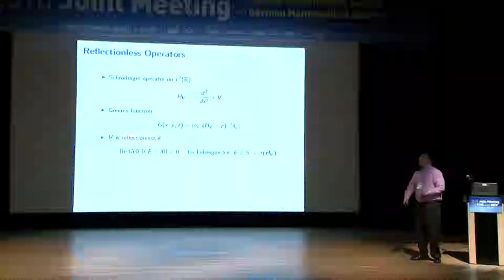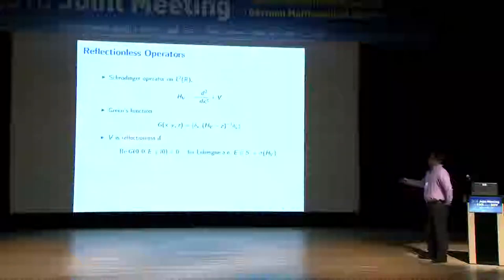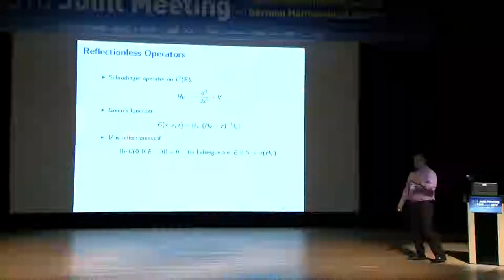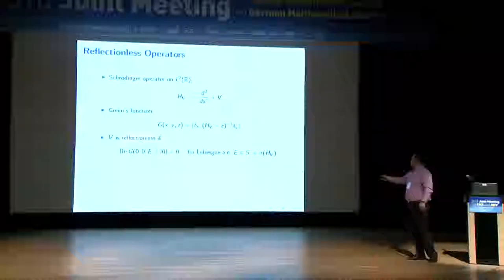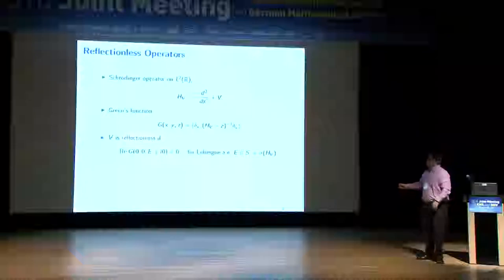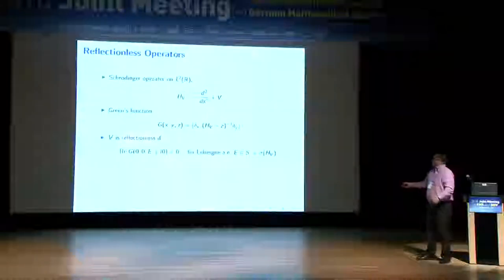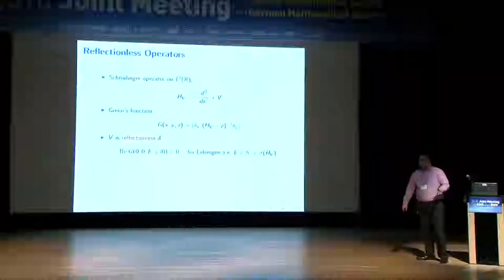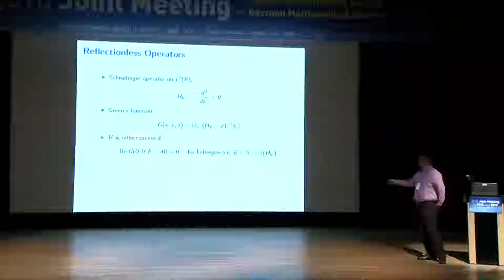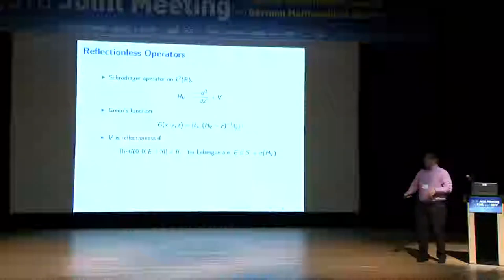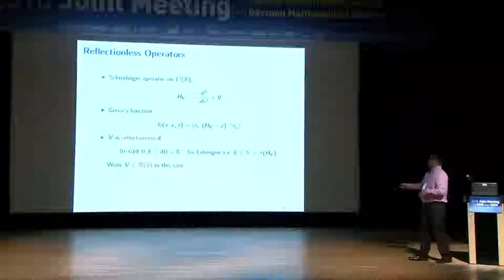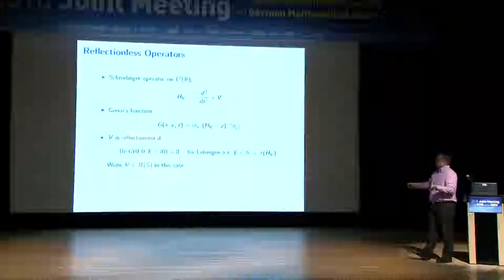Here's the key definition. You take z's in the upper half plane — by self-adjointness the spectrum is contained in the real line, so these inverses exist off the real line. You send the imaginary part down to zero; these boundary values exist almost everywhere. You look at the real part and want it to be zero — purely imaginary boundary values — for Lebesgue almost every point in your spectrum. If V has that property, you say V belongs to R(S), the collection of all potentials that are reflectionless on the spectrum S.